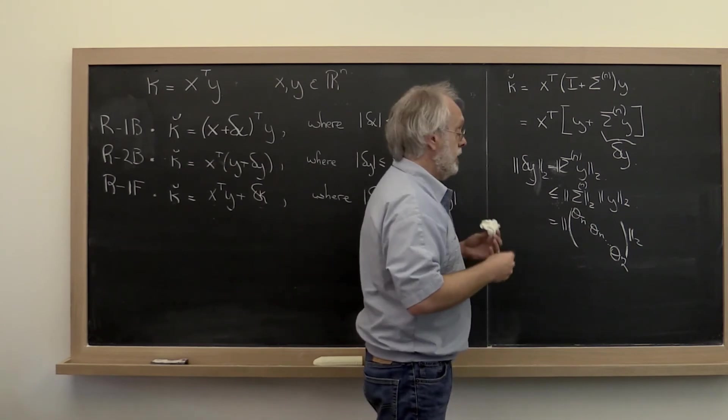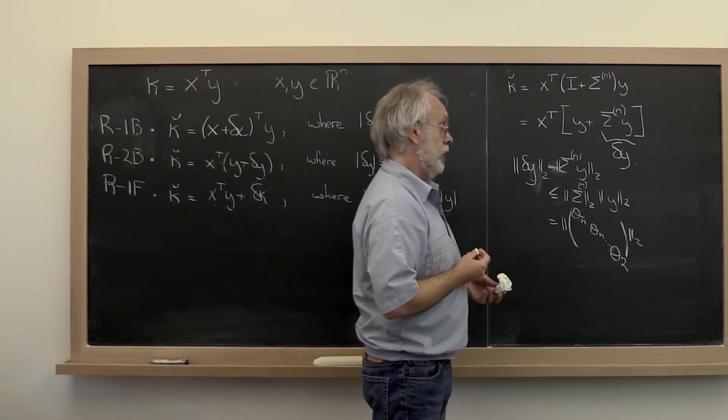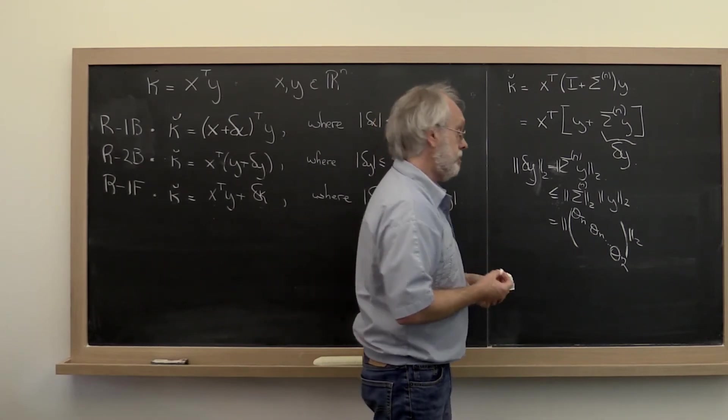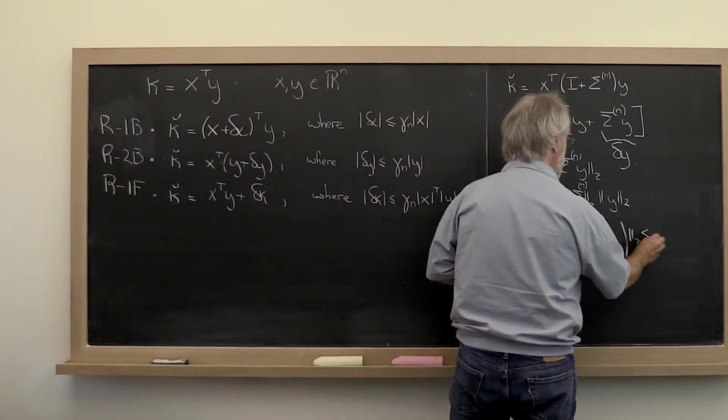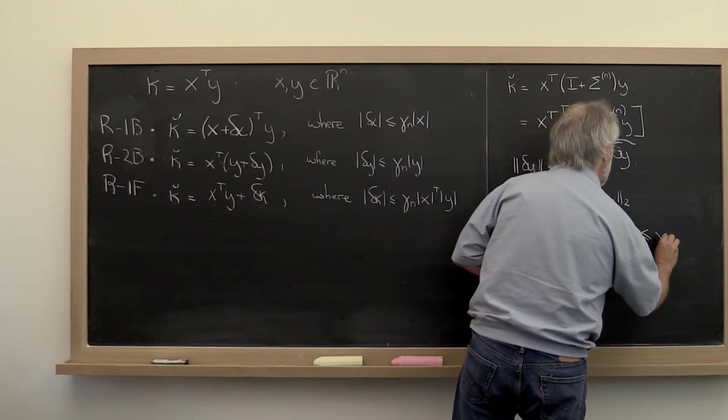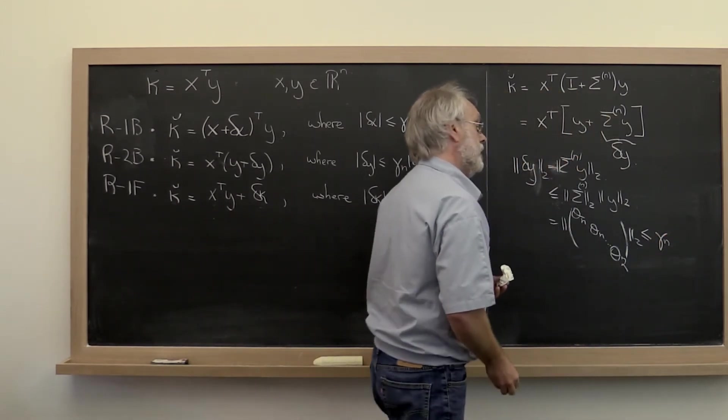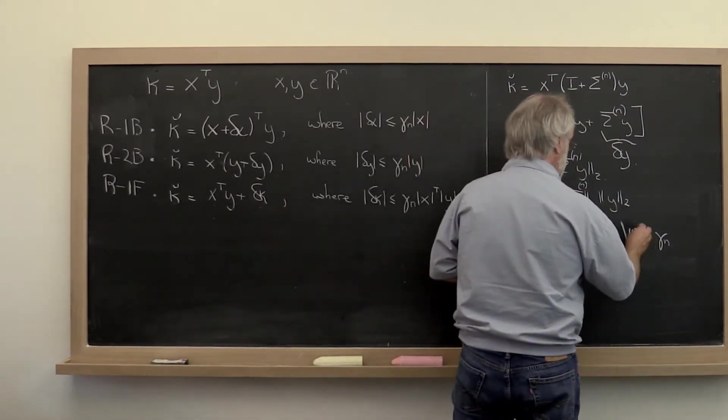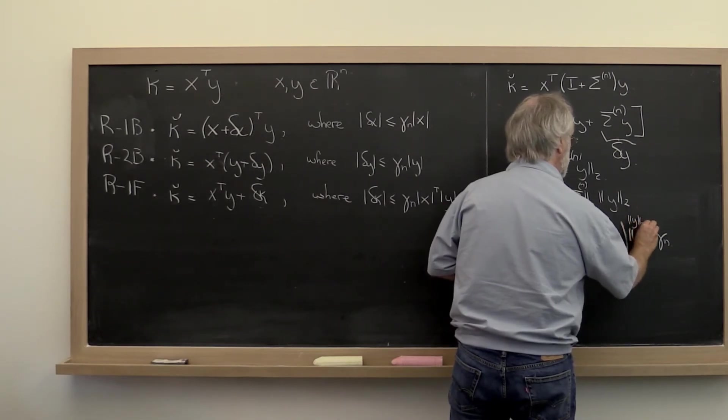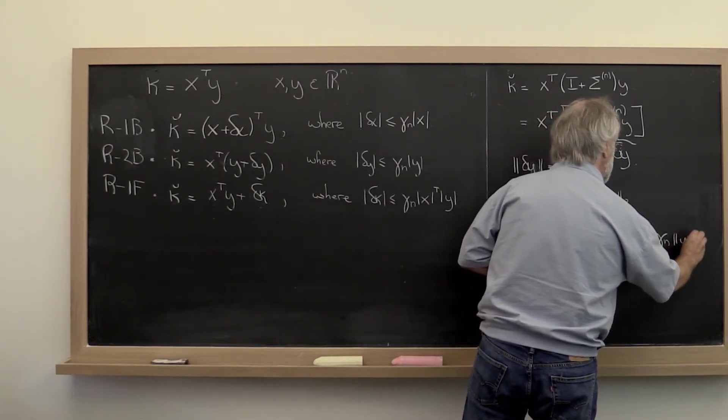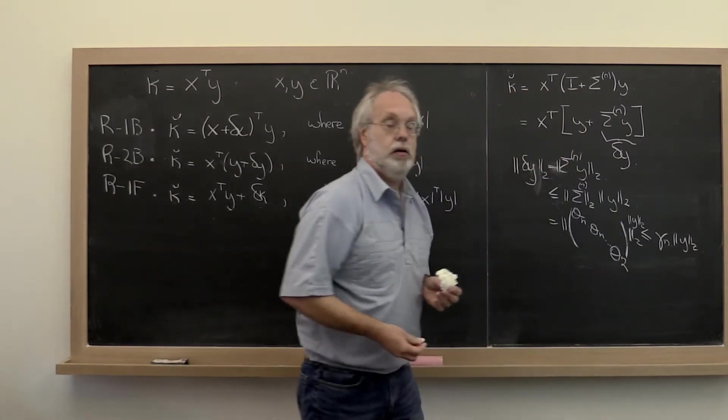...that were bounded by the largest value, namely gamma sub n. So it's easy to argue that this is actually less than or equal to gamma sub n. And then of course we need to multiply that times the 2-norm of y here and the 2-norm of y here.